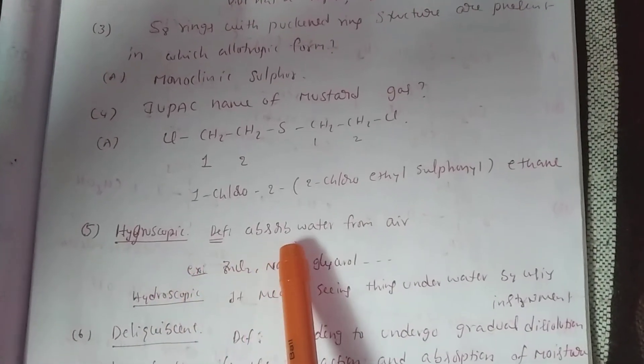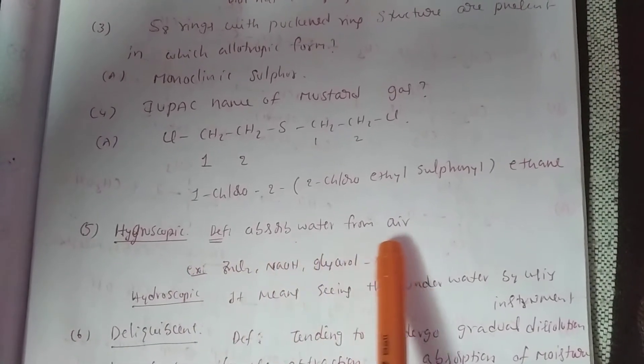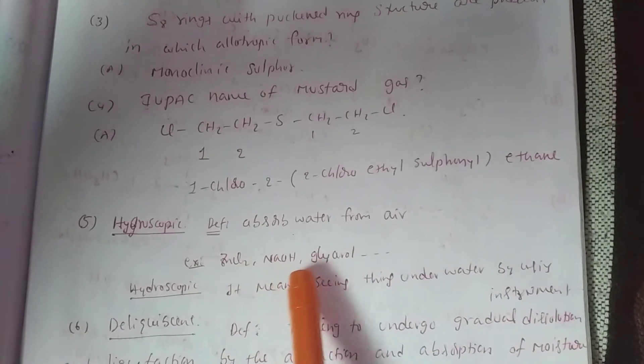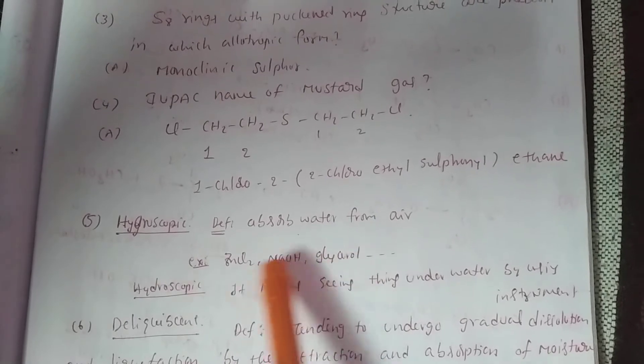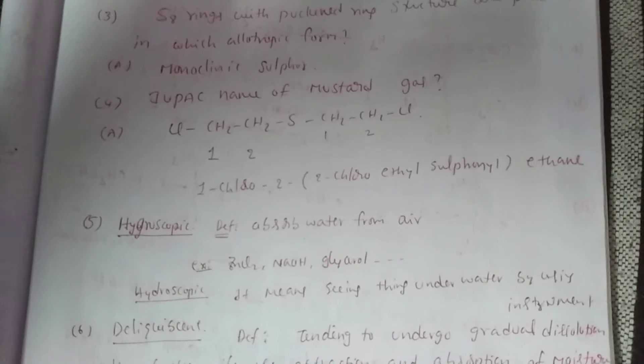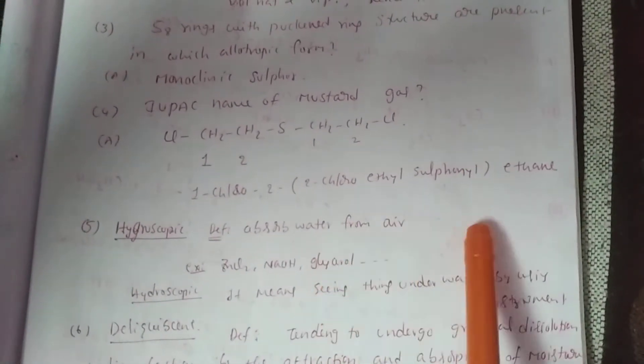Hygroscopic definition: absorb water from air. For example, ZnCl2, NaOH, glycerol. These have hygroscopic nature. Hygroscopic definition is absorb water from air.